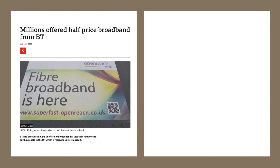There are lots of good examples around — this is a very common strategy for businesses. Back in the summer of 2021, BT announced plans to offer superfast fibre broadband at less than half price to any household in the UK receiving universal credit — households on lower incomes. It's an interesting pricing strategy to offer cheaper broadband to those households.